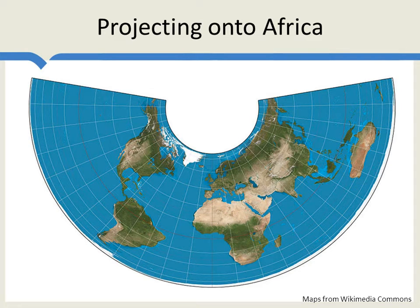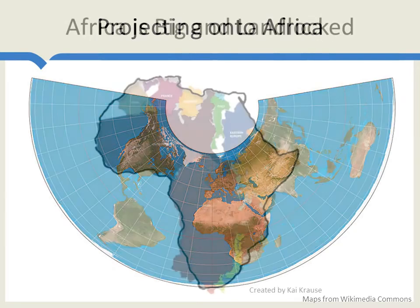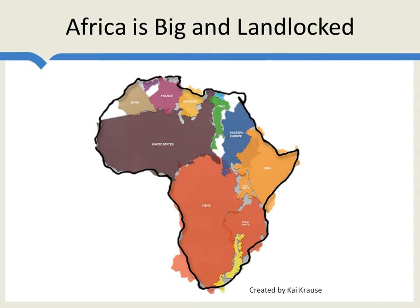Africa is big. You can fit the entire United States — excluding Alaska — into Africa. You can put China as well into Africa. India can go into Africa. Eastern Europe, most of Europe — here's Italy, Germany, France, and Spain — all fit in. Remember that inland chunk of the United States with low GDP? We can map that into Africa too. And you can see what is going on.